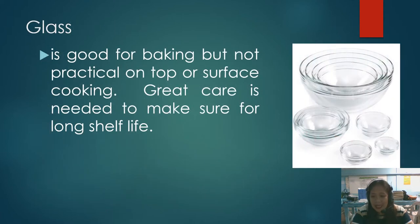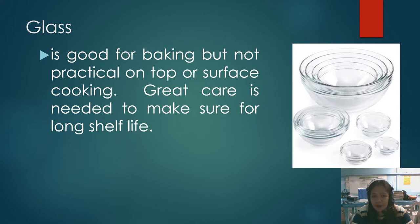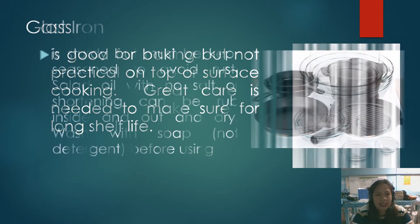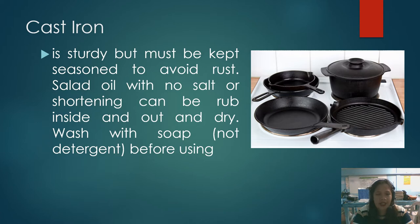Third, glass is good for baking but not practical for surface cooking; great care is needed for long shelf life. They are very fragile. Next, cast iron is sturdy but must be kept seasoned to avoid rust. Salad oil or shortening can be rubbed inside and out. It should be washed with soap, not detergent, before using.